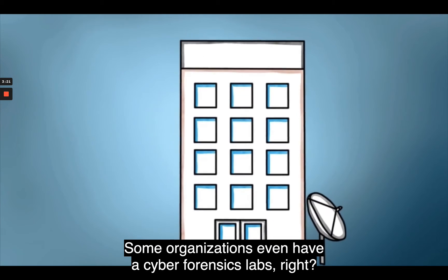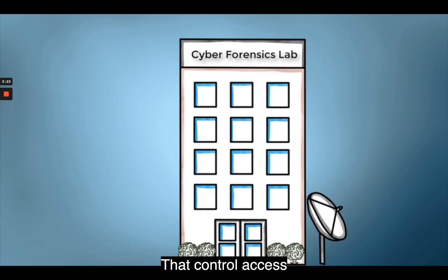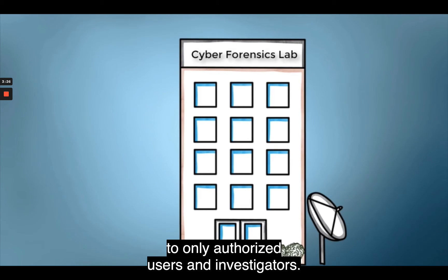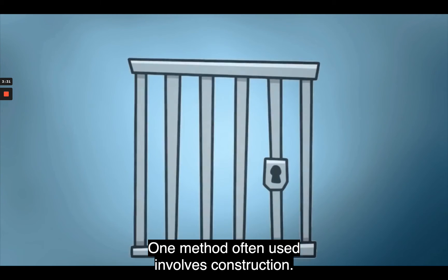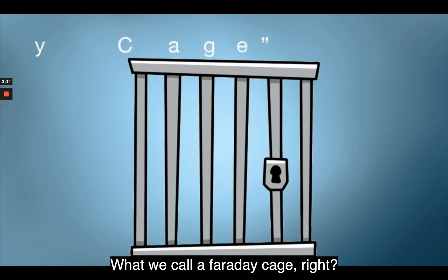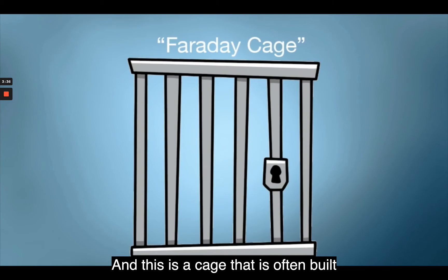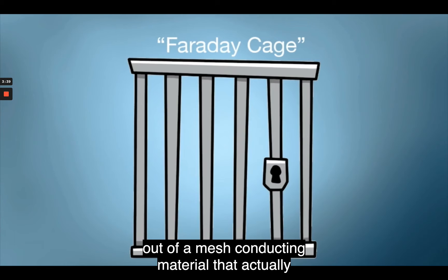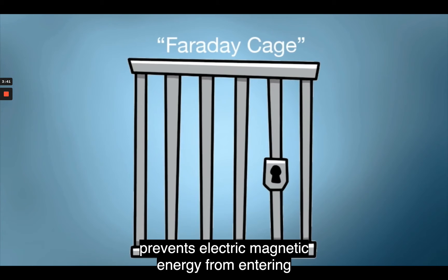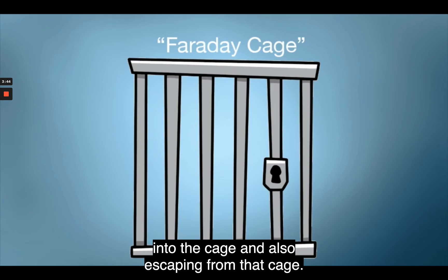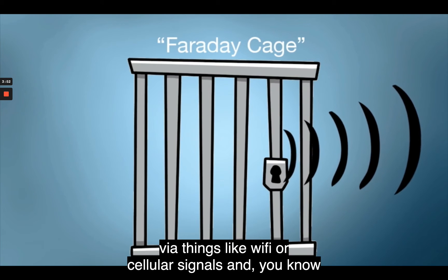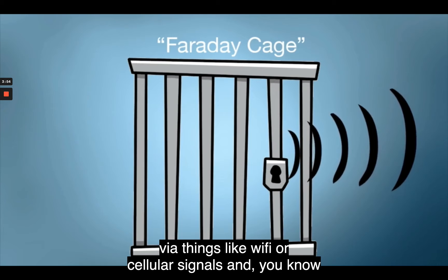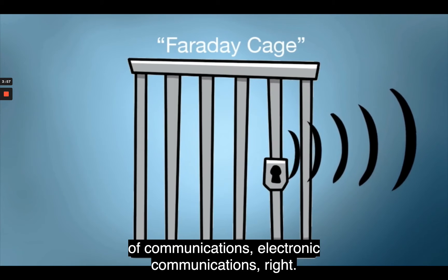Some organizations even have cyber forensics labs that control access to only authorized users and investigators. One method often used involves constructing what we call a Faraday cage. This is a cage built out of a mesh conducting material that prevents electromagnetic energy from entering into or escaping from the cage, which prevents devices from communicating via Wi-Fi, cellular signals, or any other type of electronic communications.